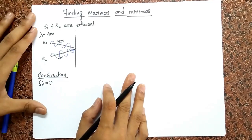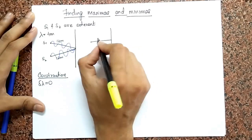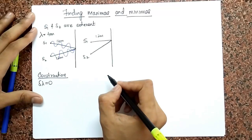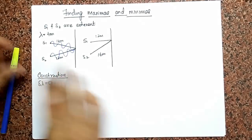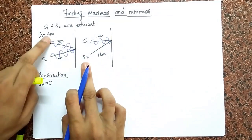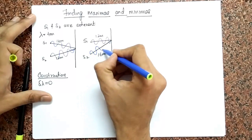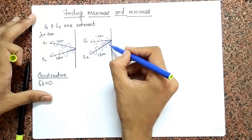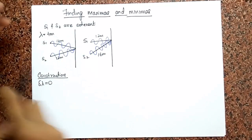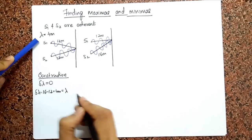When else can I get constructive interference? Suppose S1 travels 12 meters but S2 travels 16 meters. S1 again has three waves. S2: 16 divided by 4 is 4, so it ends up having four waves. When they meet — construction again. The path difference is 16 minus 12, which is 4 meters, which in our case is one lambda. So a path difference of one lambda still gives constructive interference.